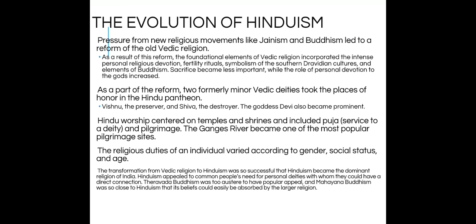As part of the reform, two minor Vedic deities took places of honor in Hinduism: Vishnu the Preserver and Shiva the Destroyer. Hindu worship focused on various gods and goddesses, each with interesting background stories and a counterpart of the opposite gender. Hindu worship took place in temples and shrines and included service to a deity — clothing it, cleaning it, and feeding it. The Ganges River became one of the most popular pilgrimage sites. The transformation of the Vedic religion to Hinduism was so successful that it became the dominant religion in India, appealing to common people's need for personal deities with whom they could have a direct connection.